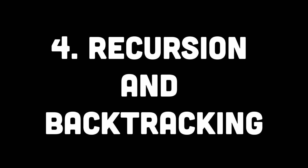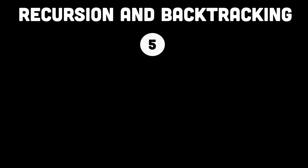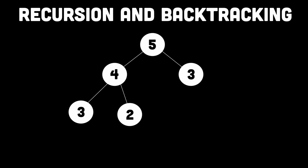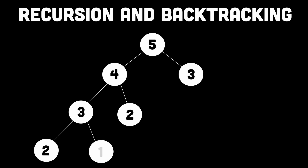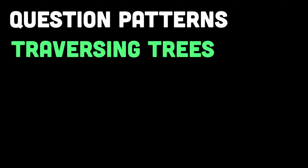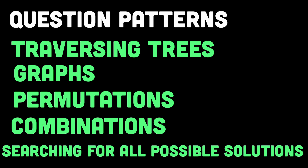The fourth pattern is recursion and backtracking. This pattern is used to solve problems by breaking them down into smaller, similar sub-problems. When a function calls itself during its execution, it's called recursion. Backtracking is a technique used when exploring multiple possibilities to find a solution — it involves making a choice, exploring that choice, and then undoing it if it doesn't lead to a valid solution. Recursion allows you to break a problem into smaller sub-problems, while backtracking allows you to explore different possibilities and find the optimal solution. This pattern is commonly used in problems involving traversing trees, graphs, permutations, combinations, and searching for all possible solutions.